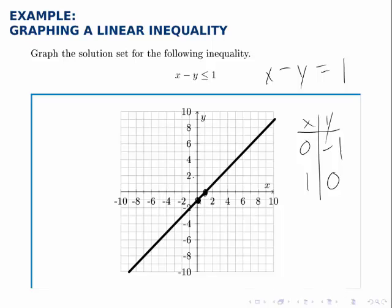So if x is 0 and y is 0, we check to see whether the inequality makes sense. Does 0 minus 0 less than or equal to 1 make sense? In other words, in this case, we get 0 less than or equal to 1, which is true. It checks out.